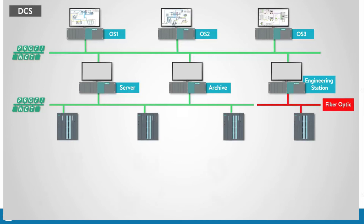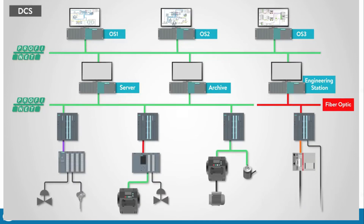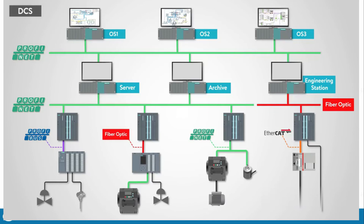The next level is the field device level. Communications between this level and the processor level can be nearly any type compatible with the components, including industrial Ethernet, Profibus DP, EtherCAT, fiber optic, or other proprietary communication protocols. Components at this level would be devices such as transmitters, switches, valves, motors, remote or distributed I/O, and more.